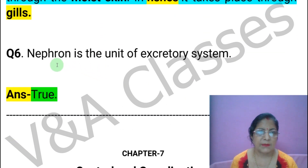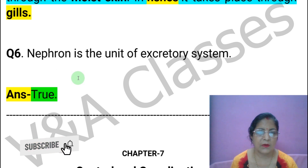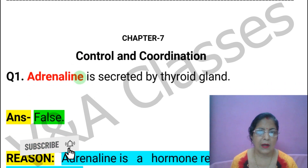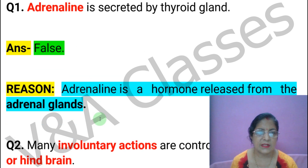Next statement: Nephron is the unit of the excretory system. This statement is TRUE. Note: the earlier statement mentioned neuron, which is why that one was false. Now Chapter 7: Control and Coordination. First statement: Adrenaline is secreted by the thyroid gland. This statement is FALSE.